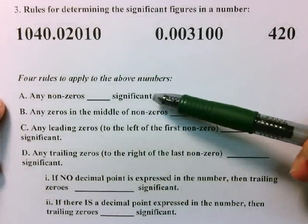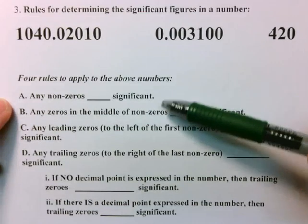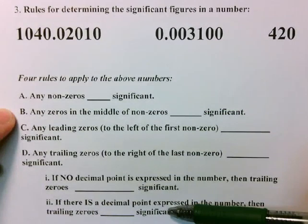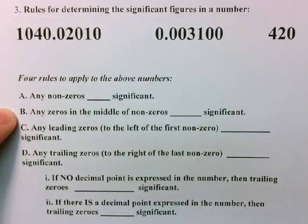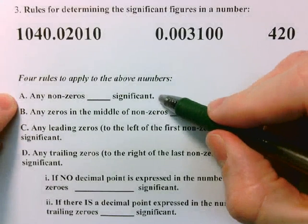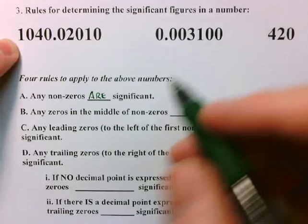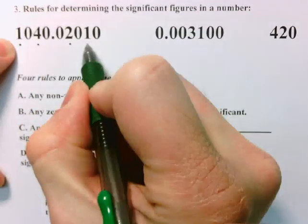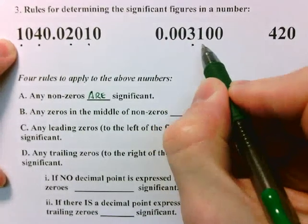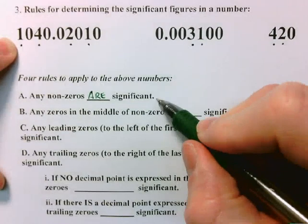Before I start, I just want to say the first rule talks about non-zeros — numbers like 1, 2, 3, 4, and 5, and so forth. All of the other rules are about zeros, because zeros can be kind of tricky and require us to look at them a little bit closer to determine if they are significant or not. So let's deal with the first rule: any non-zeros are significant. I'm going to put a little green dot under each one of the non-zeros. Rule A says those digits are significant figures.